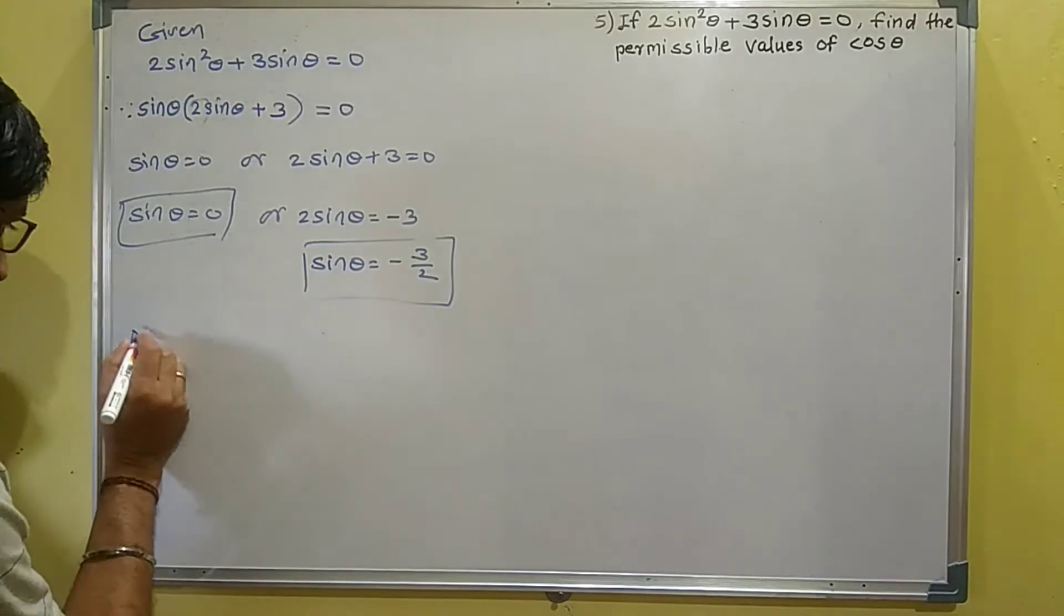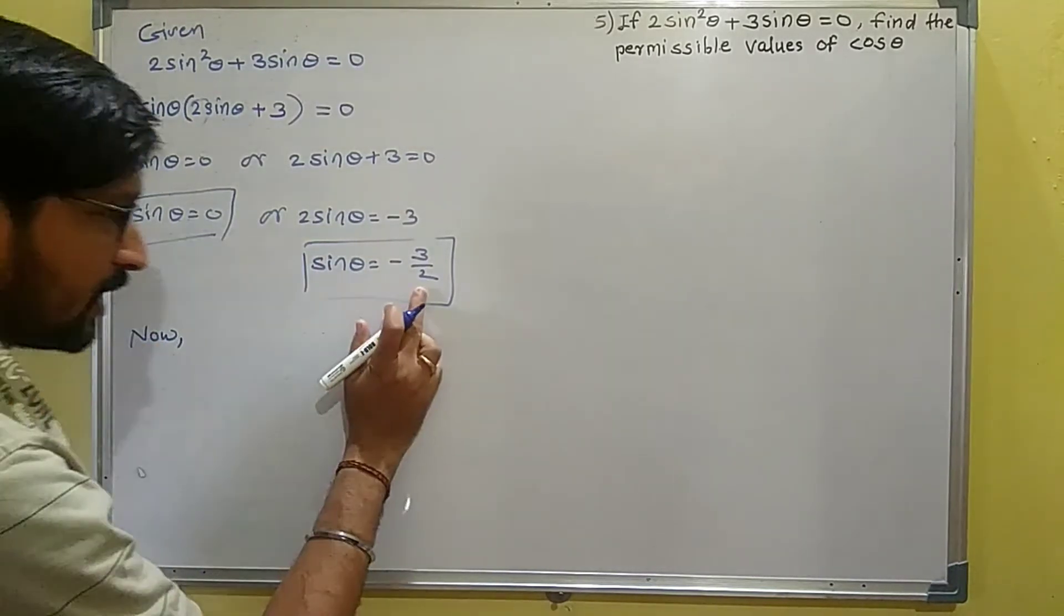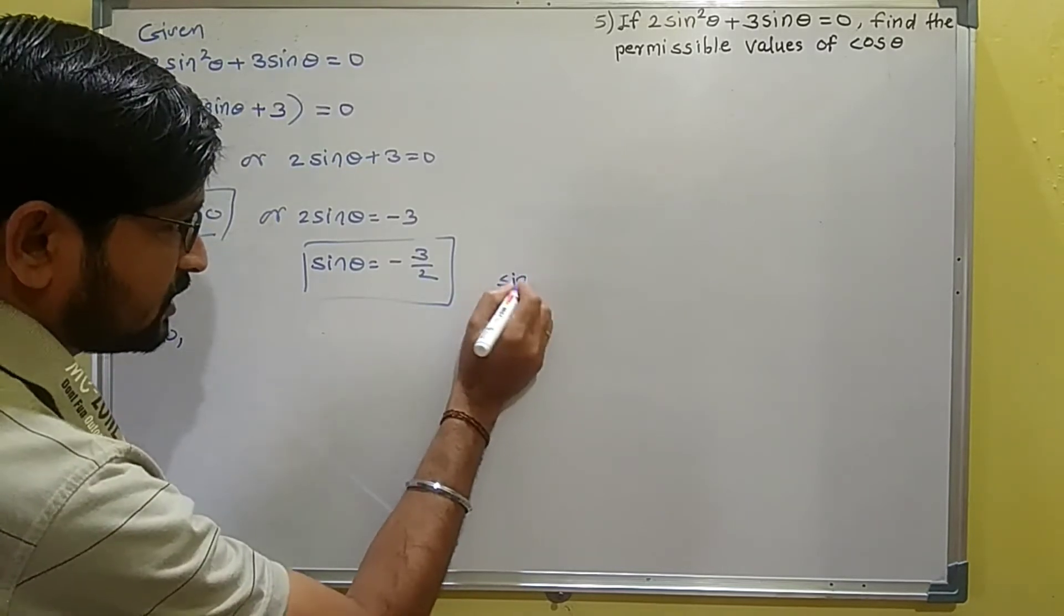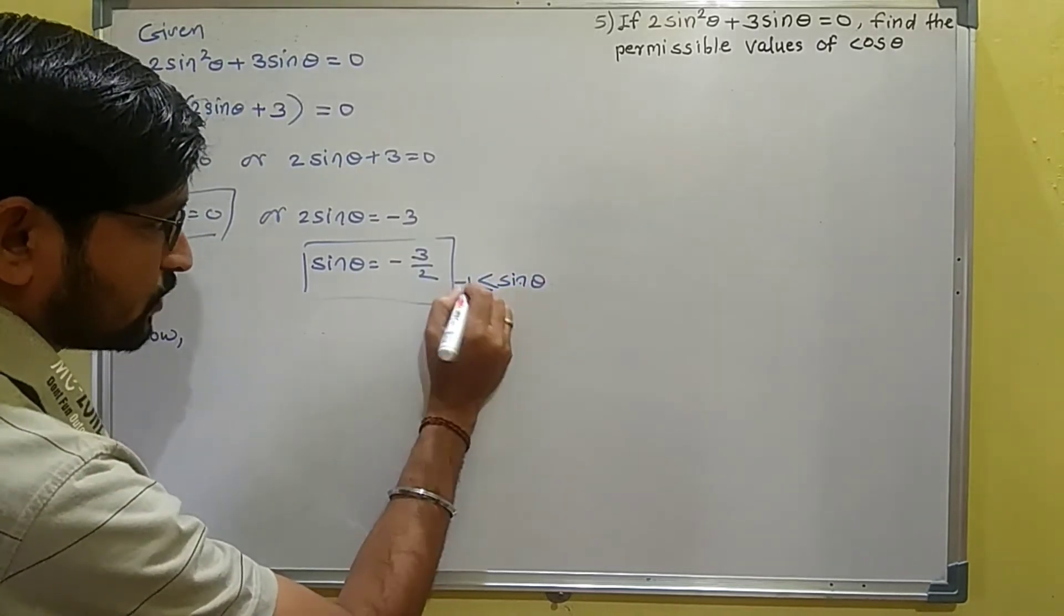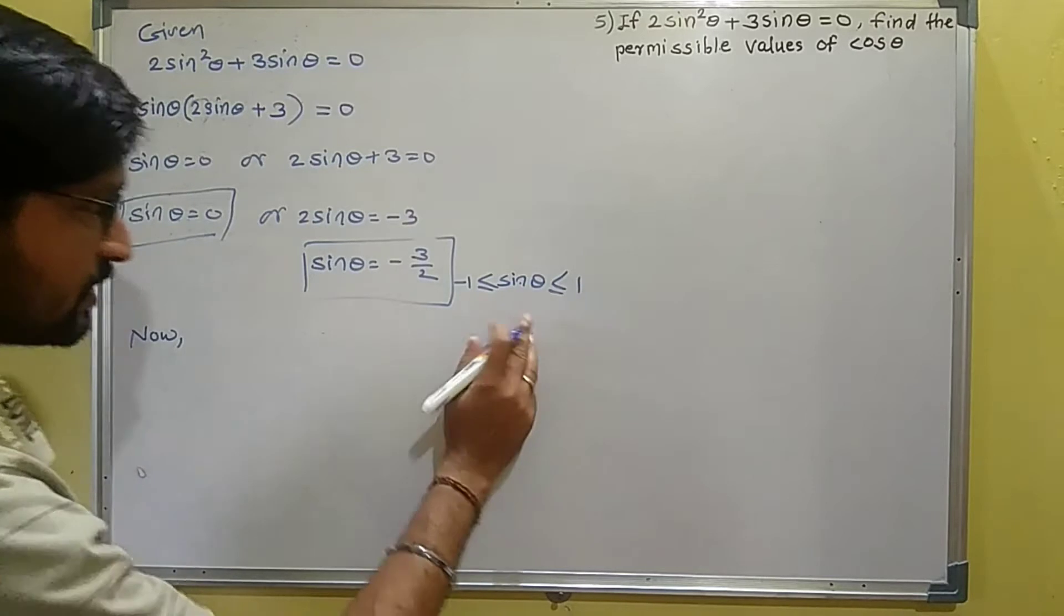Now to find cosθ, we use the fact that sinθ lies between -1 and 1, and we found sinθ = 0.